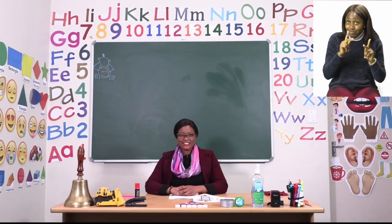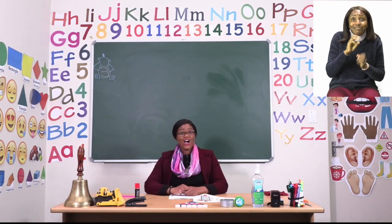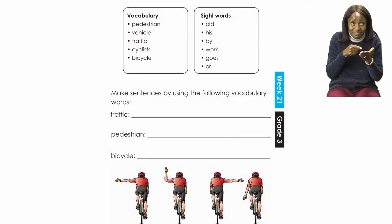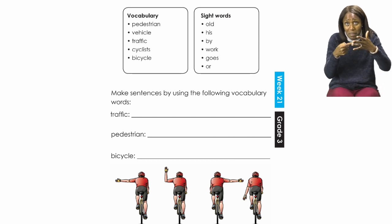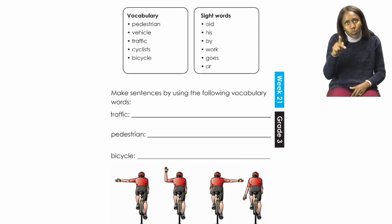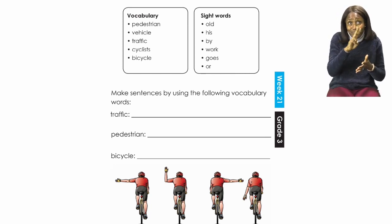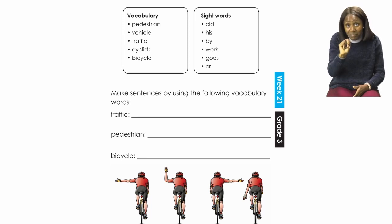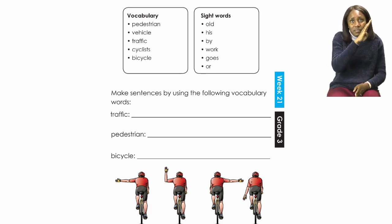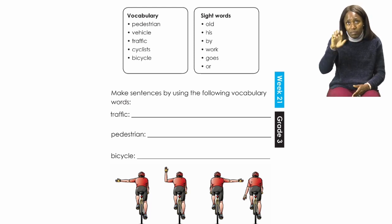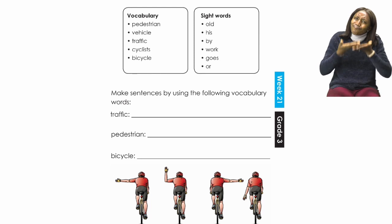To start our lesson today, boys and girls, let's all turn to page 3. On page 3 we are going to be doing vocabulary. We're going to take a look at our vocabulary words and our sight words as well. For our vocabulary words today we have: pedestrian, vehicle, traffic, cyclist, and bicycle. As always, we have vocabulary words to broaden our words when we are writing and speaking, so we need to know the meaning of each of these words.